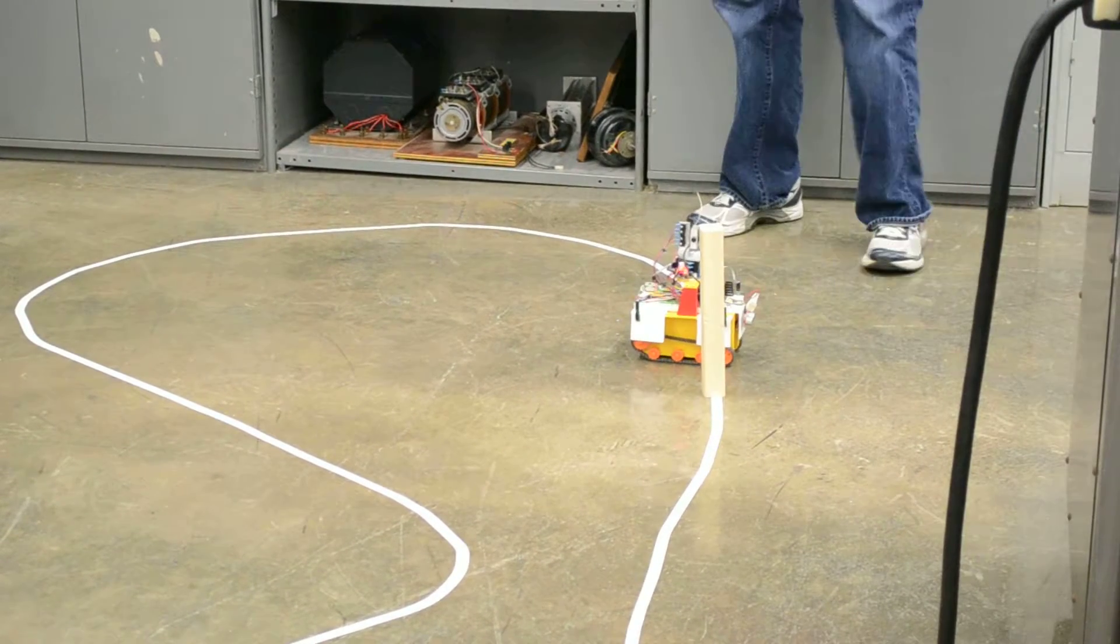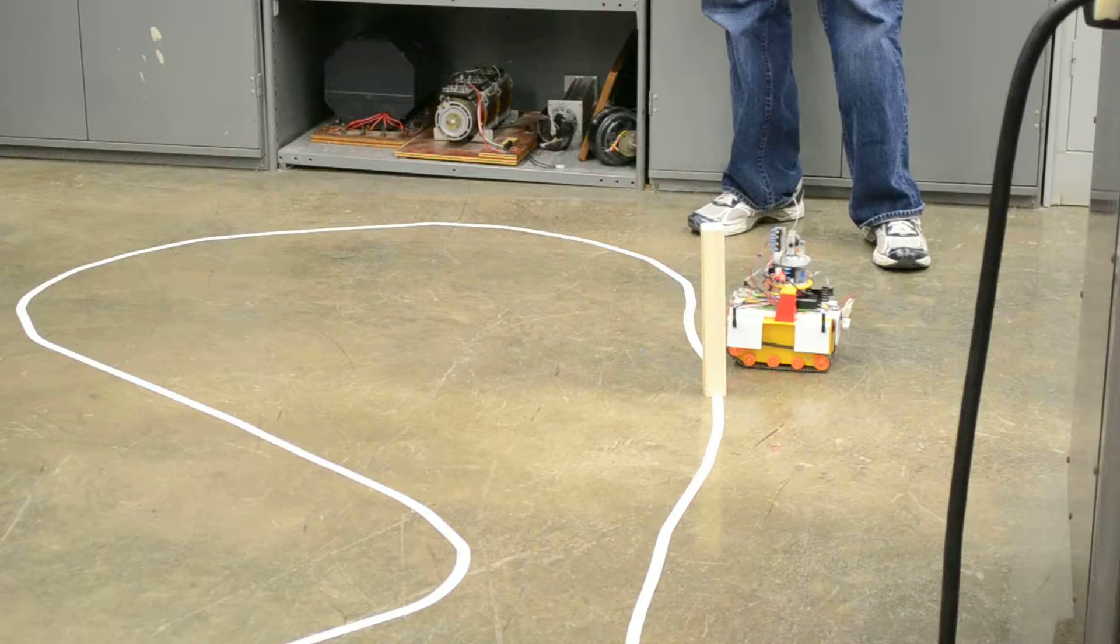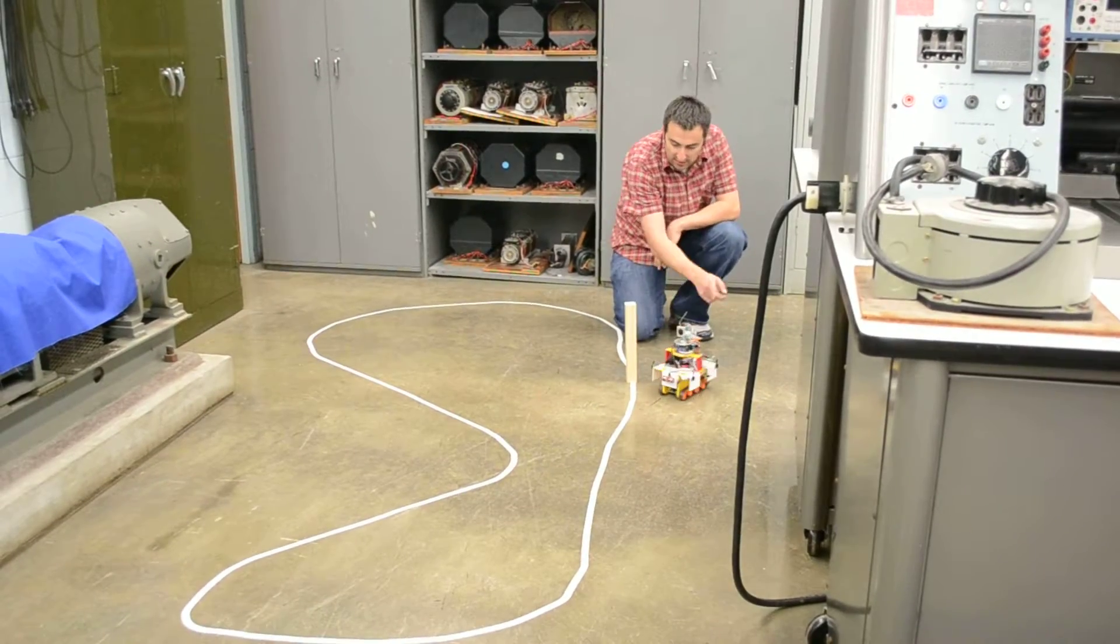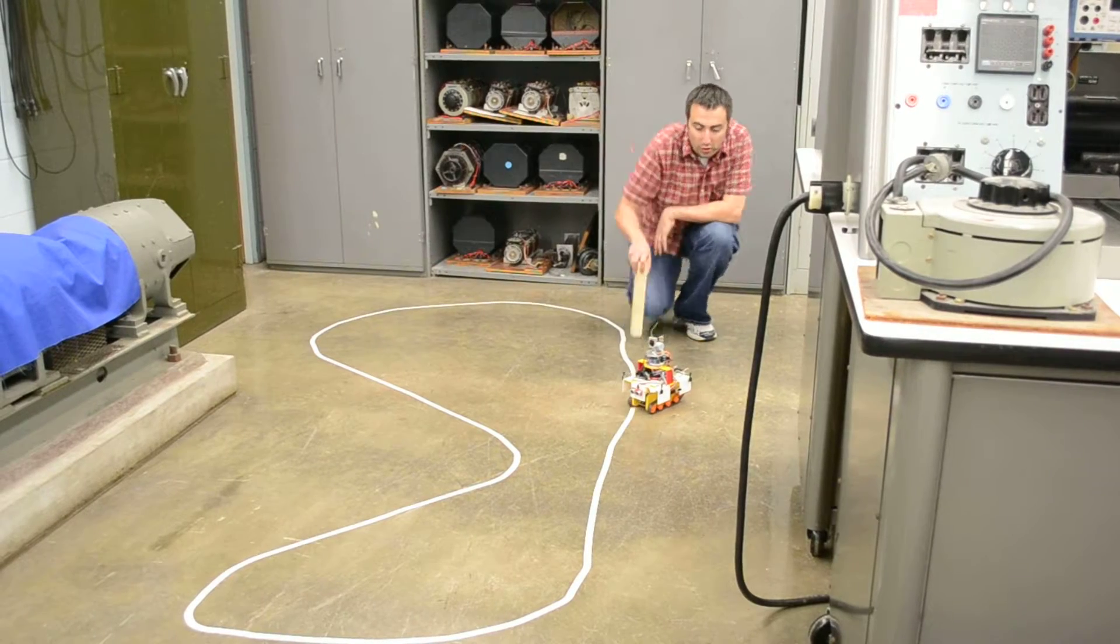Right now it should turn to the left. See the vehicle, see the object, turn to the right, go straight until it passes the object, turn again and continue on its path.